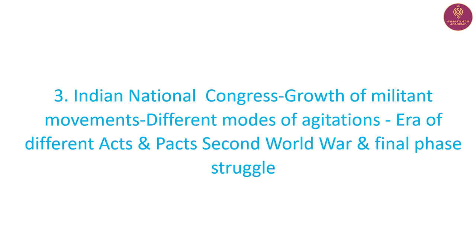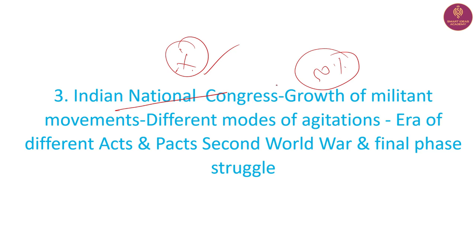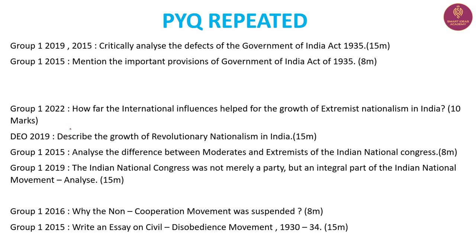The third topic is a very important topic covering about 50% of the syllabus. If you look at this topic, there are three different sub-topics. The first aspect is the Government of India Act 1935 — its provisions and defects. The second one is extremism, revolutionary nationalism, and modernism.